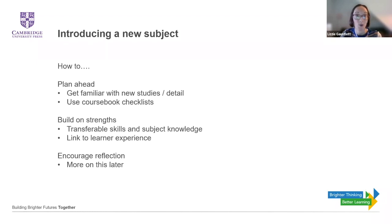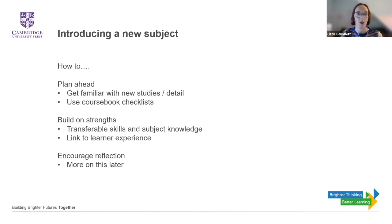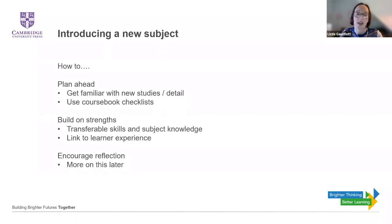In terms of transferable skills and subject knowledge, it's a chance to ask yourself those questions: what will my learners already know, what are they likely to find really interesting, what do I know from past experience that they might struggle with? You might also want to consider who your learners are - what other subjects will they be studying, will they have a background in maths and biology, will they have experience of practical investigations, some may even have undertaken GCSE psychology. With those things in mind, you can build on thinking about their preconceptions and expectations of studying psychology. The resources are great for linking to learner experience, and Tamsin is going to show you some examples of how you can consider your learner's existing experience and bring that into the subject.